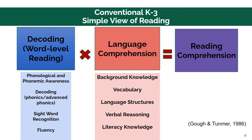An overview of the K through three subskills of the simple view of reading is as follows. Decoding skills comprise phonological awareness—the ability to manipulate sounds and words—phonics, sight word recognition, and fluency. Language comprehension skills include building background knowledge, vocabulary, language structures, verbal reasoning, and literacy knowledge. The next slide will break down the components of the simple view of reading at the adolescent level.